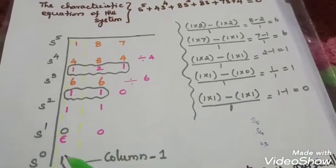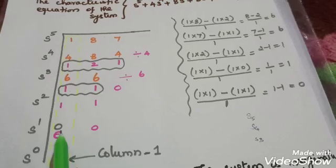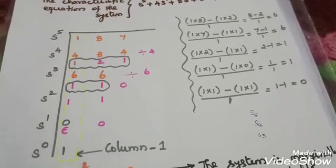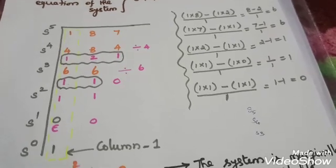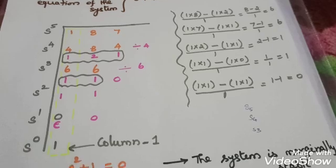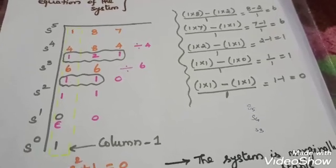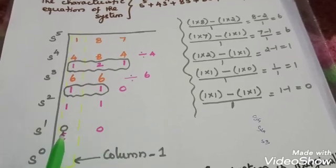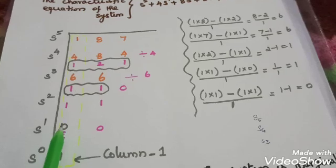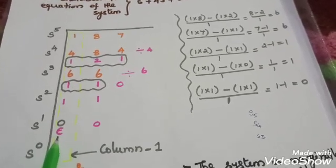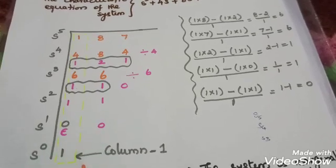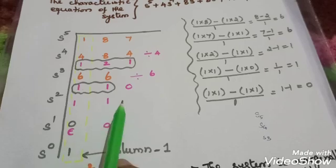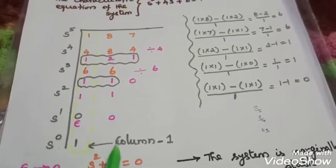Now, you will know that this row's first element is 0. Since the first element is 0, you say epsilon. Epsilon will consider it. This is the cross multiply: epsilon into 1 minus 1 into 0, divided by epsilon. Epsilon cancels, so the S⁰ value is 1.